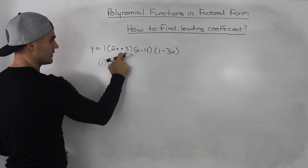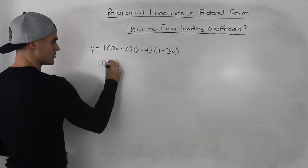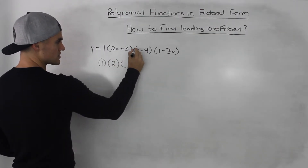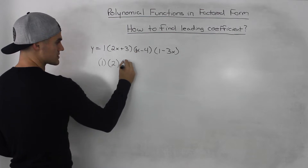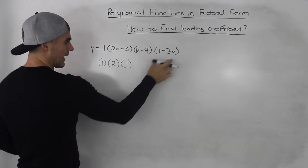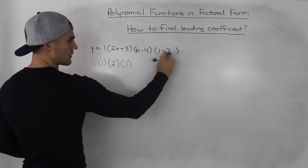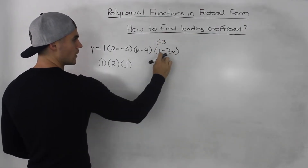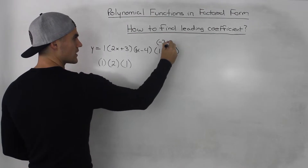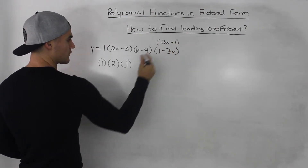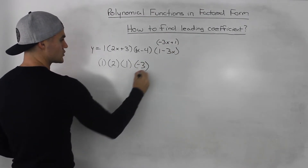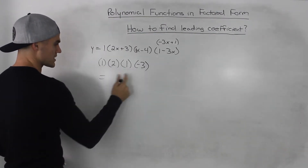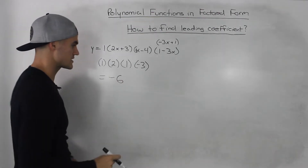The leading coefficient in 2x plus 3 is the 2. The leading coefficient in x minus 4 is the 1 in front of the x, so that's 1. And then the leading coefficient here is negative 3 — notice 1 minus 3x is the same as negative 3x plus 1, so negative 3 would be the leading coefficient. And then you just multiply them together: 1 times 2 times 1 times negative 3 gives you negative 6.